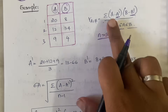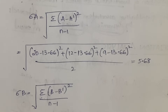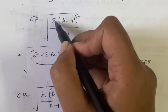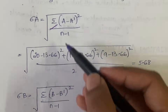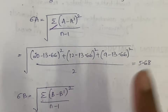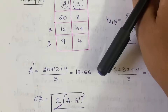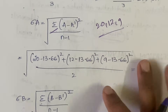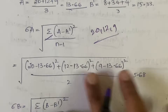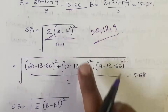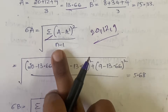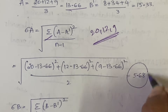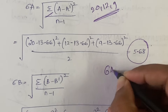Next, calculate sigma-A. Sigma-A equals the square root of [sigma(A minus A-bar) squared divided by (n minus 1)]. Using values 20, 12, 9 for A and A-bar = 13.66: sqrt[((20−13.66)² + (12−13.66)² + (9−13.66)²) / (3−1)] = sqrt[... / 2]. The result is sigma-A = 5.68.